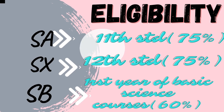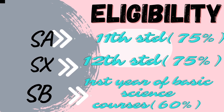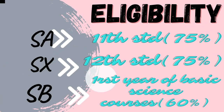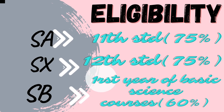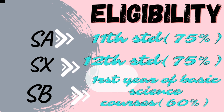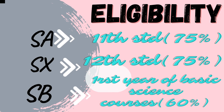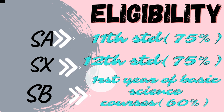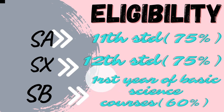To give the SX paper, you must have chosen the science stream in your higher studies. If you have enrolled in the first year of basic science courses in your undergrad and have passed your 12th examination with at least 60% marks and also your first year final examination with 60% marks, then you can give the SB paper of KVPY. If you fall under SC, ST or PWD category, then you must have scored at least 50% marks.